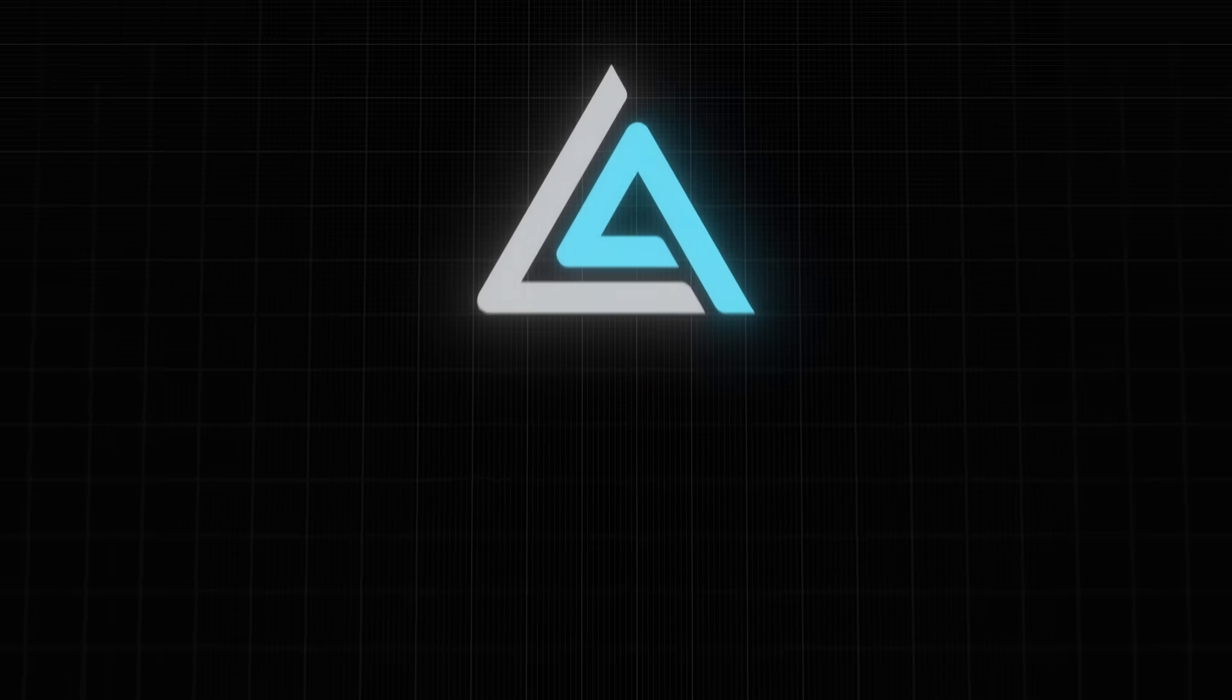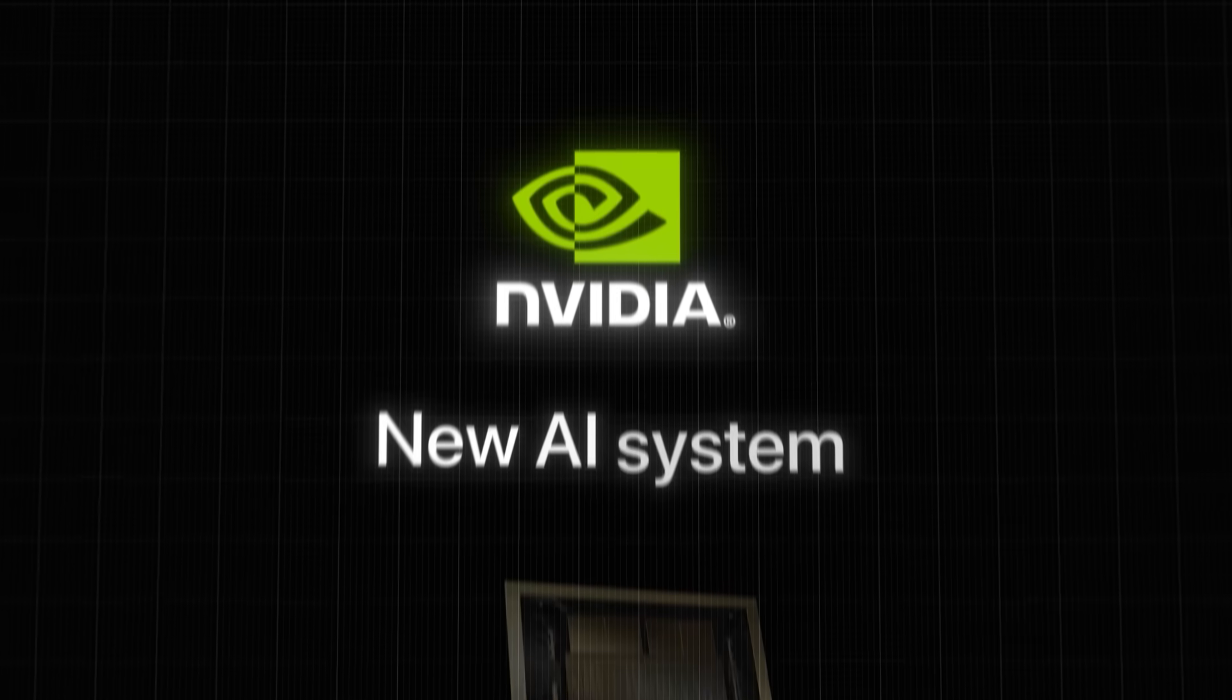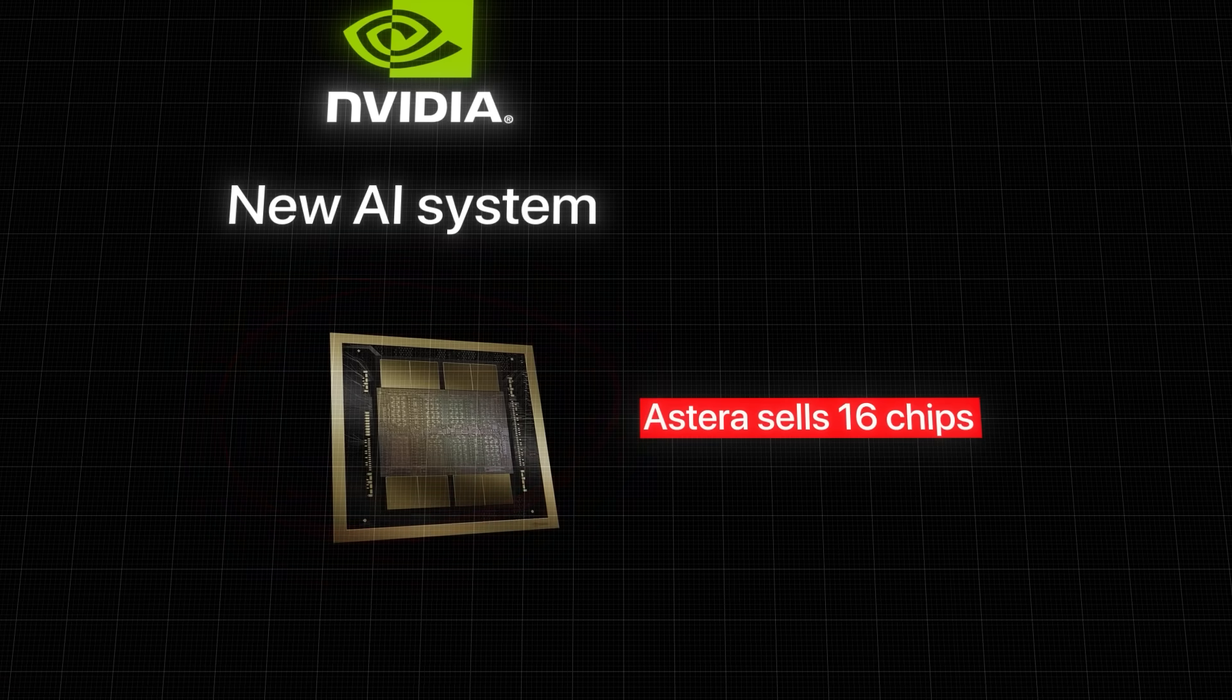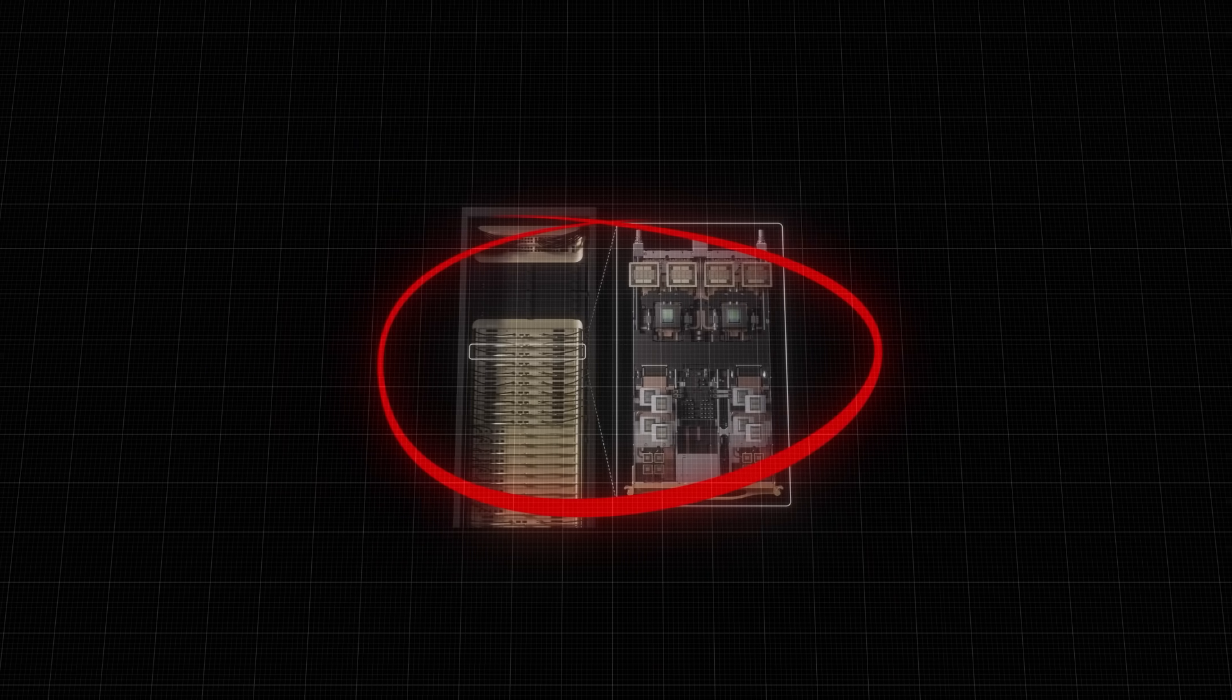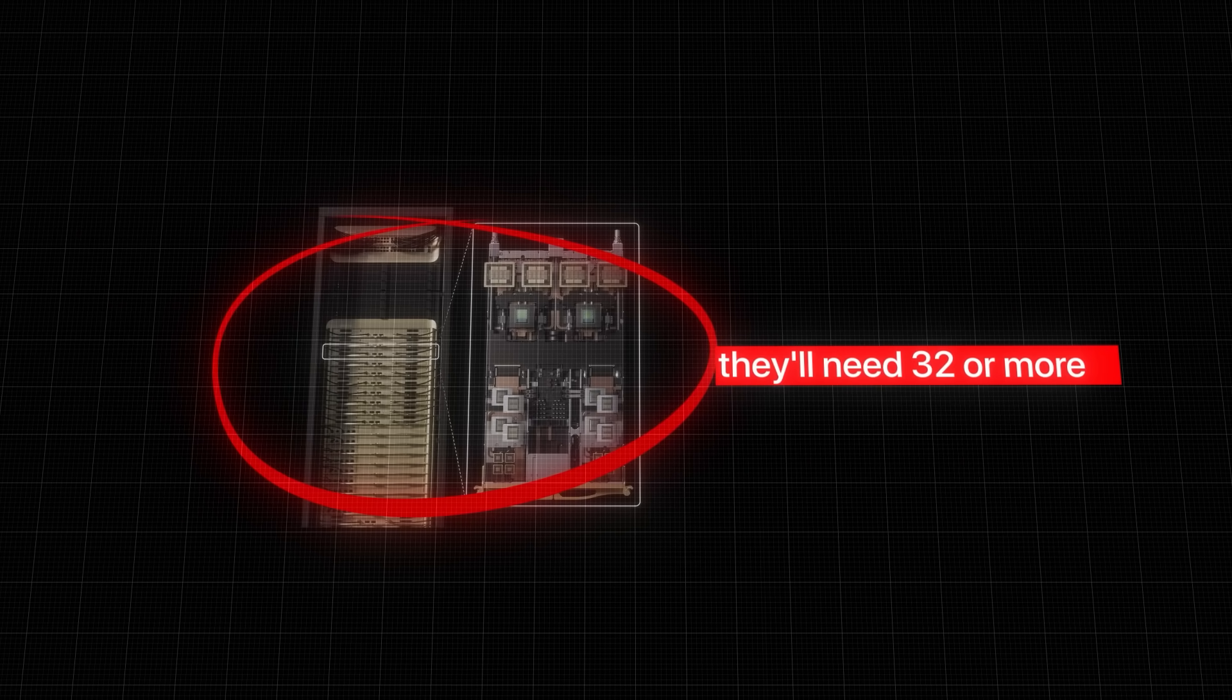And some analysts believe that Scorpio could generate $3 billion annually by 2029, as the industry shifts to rack-scale architecture. But Astera is relying on the multiplication effect to drive them. Because when NVIDIA sells a new AI system like Blackwell, Astera sells 16 chips into it. And for Rubin, NVIDIA's next generation of AI systems? Well, they'll need 32 or more of Astera's chips.